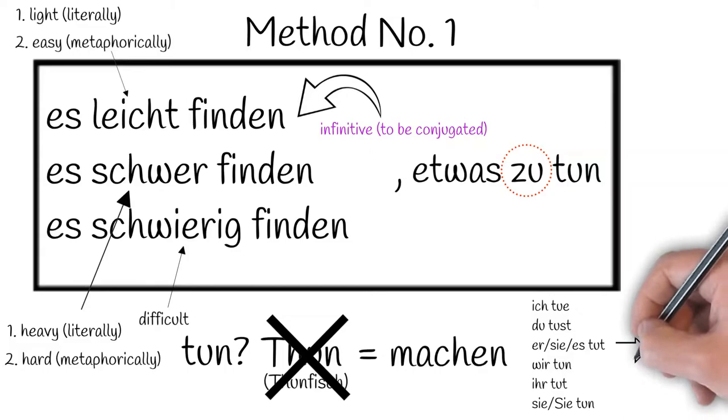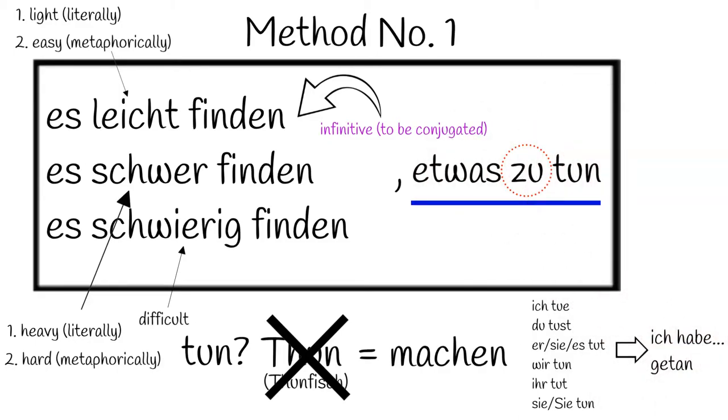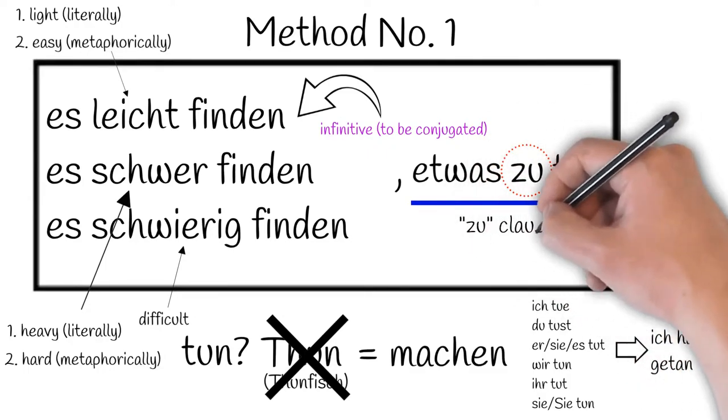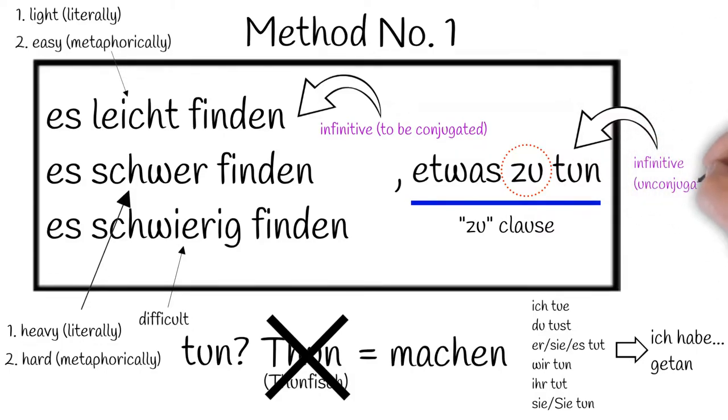But in the past tense, there is an irregular past participle and that is getan. Ich habe getan. But this second part of the first method, etwas zu tun, we don't want to actually change because this is what we might call a zu clause. That is, you have an infinitive form of the verb, which is unchanged, and in front of it, the word zu. This is a very common structure after verbs which are not modal verbs.